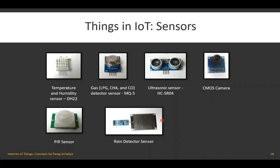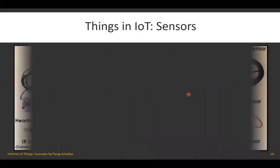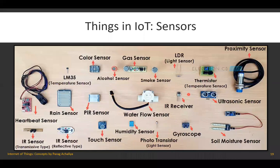The rain detector sensor, as the name suggests, is used to detect rain. The fire detector sensor is used to detect fire at various locations. If you observe the ceiling in a mall or cinema hall, there will be a white object placed there — that is the fire detector sensor. Whenever there is fire or some gas present, this particular sensor will start alarming the situation.